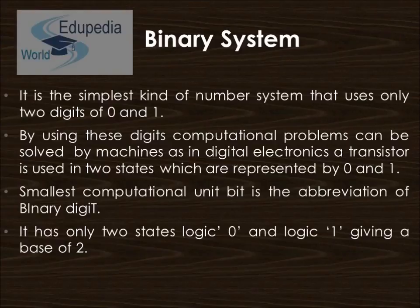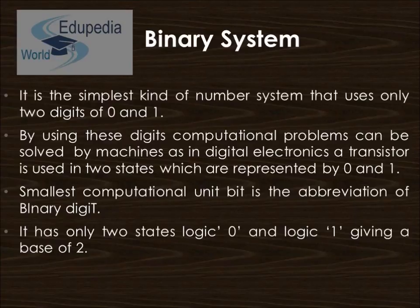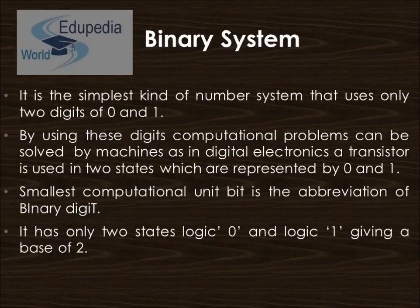The first number system is the binary system. It is the simplest kind of number system, using only two digits: 0 and 1. In digital electronics, a transistor is used in only two states, represented by 0 or 1. The smallest computational unit, the bit — short for binary digit — has only two states: logic 0 or logic 1. This gives the binary number system a base of 2, making it the internal language of electronic computers.